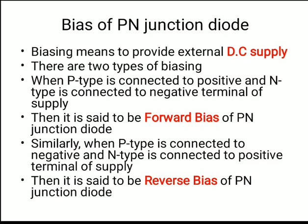Biasing means providing an external DC supply. There are two types: forward bias and reverse bias. When p-type is connected to positive and n-type is connected to the negative terminal of a supply, it is a forward bias of the p-n junction diode.